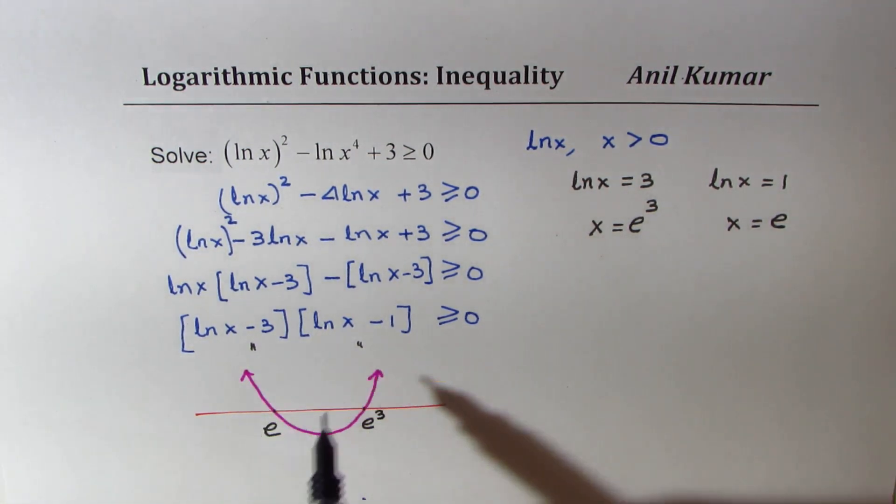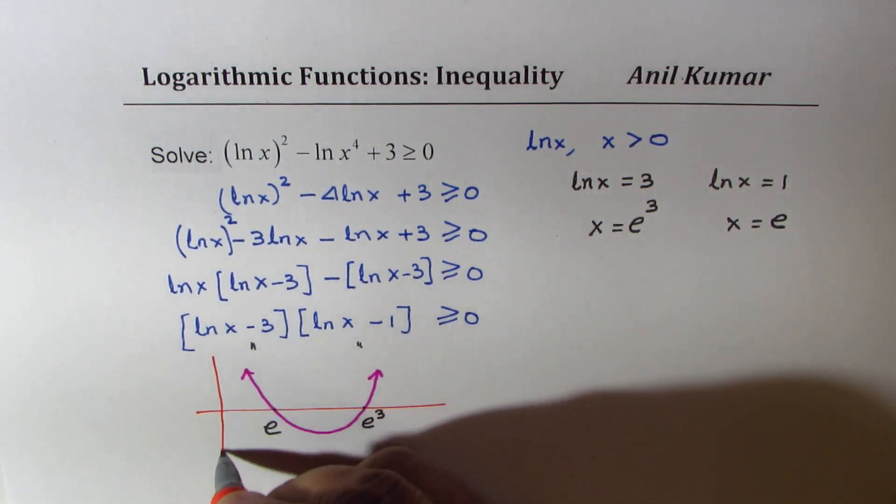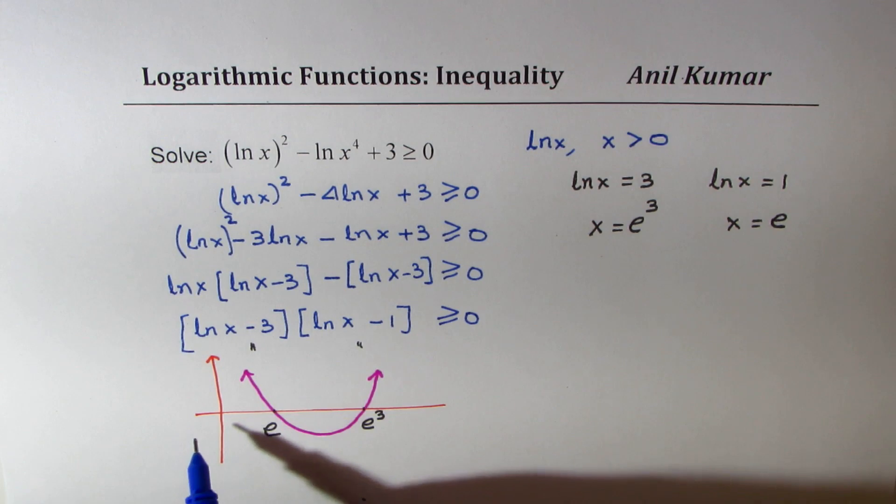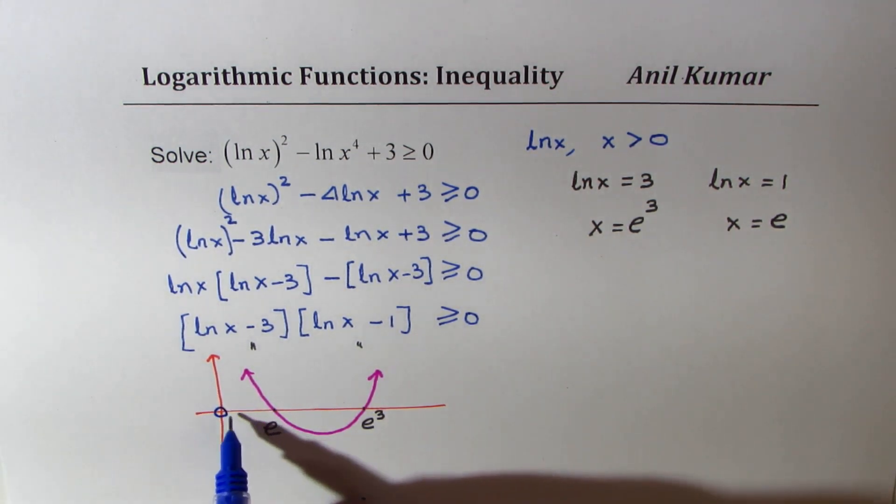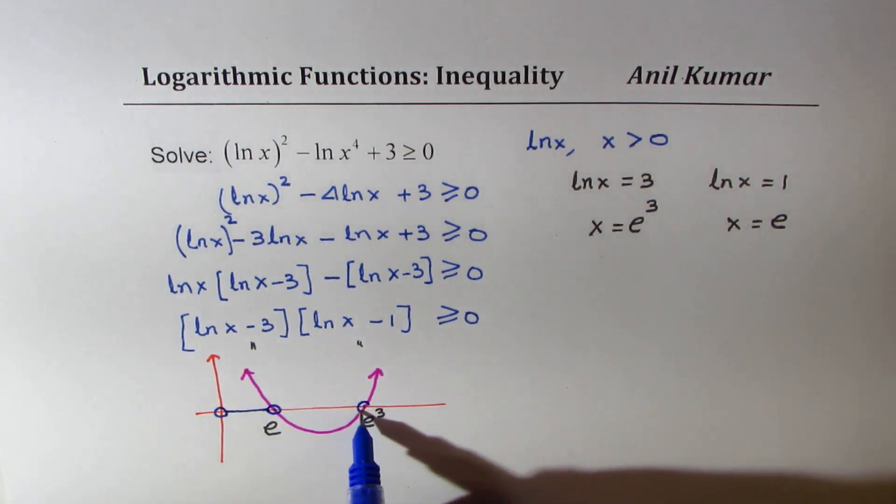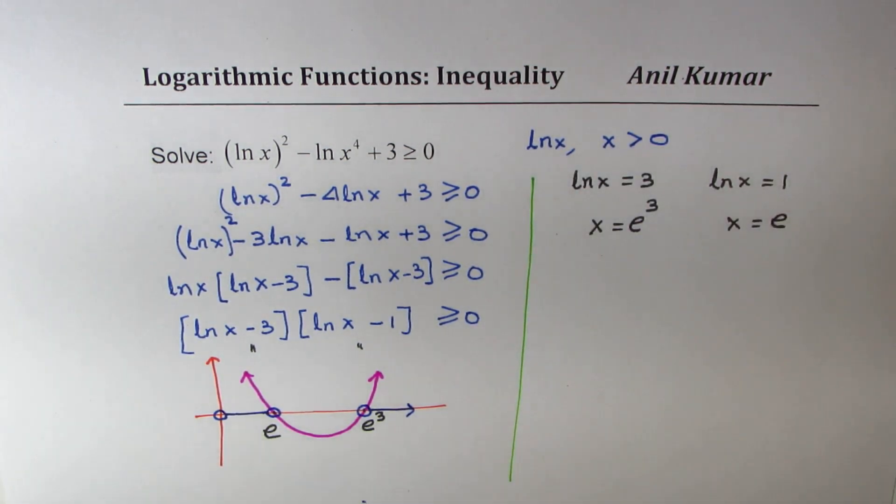We want this function to be greater and we also know that the function is only valid for values which are on the right side of 0. So basically we do get a solution which is from 0 to e and beyond e cubed. So that is how we can actually solve this particular question.